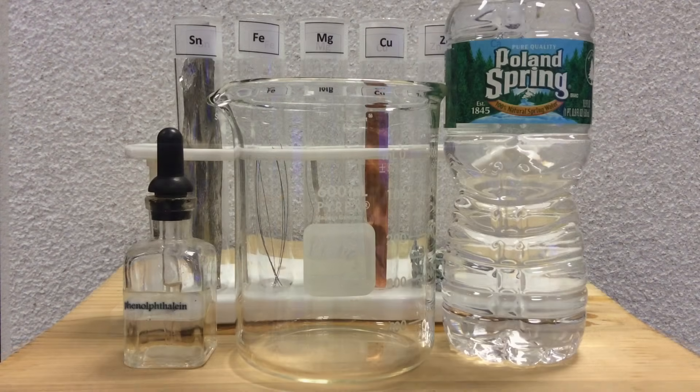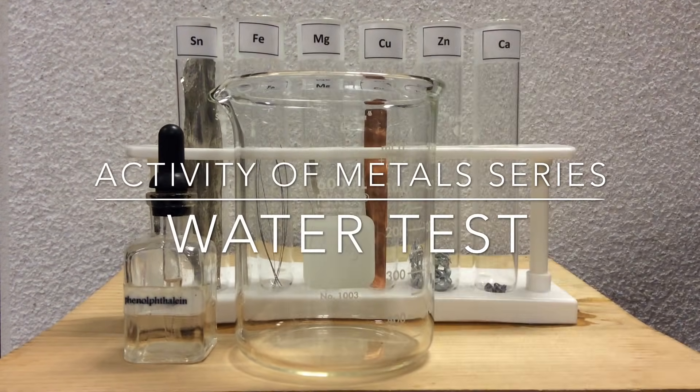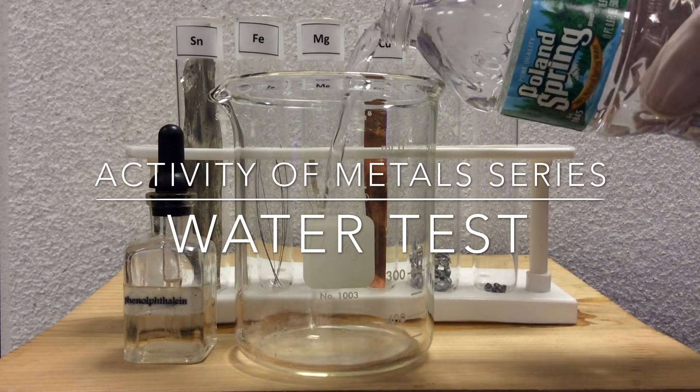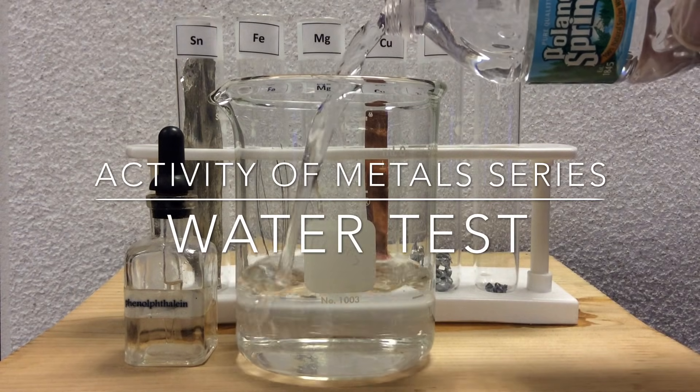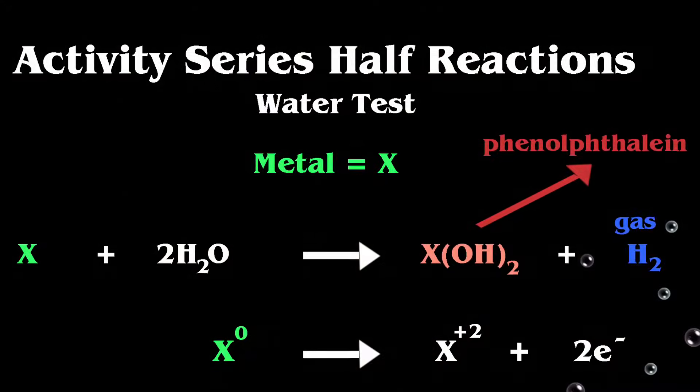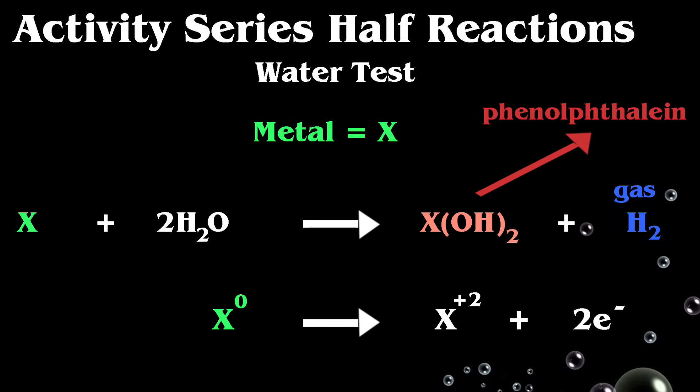So our second test here is going to be with water. And it's a very similar reaction. And we're going to add phenolphthalein to that to see how the water reacts with the metal. Now as we look at the half reactions coming up, we can see that the water is going to react with the metal to make a hydroxide, a base.